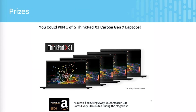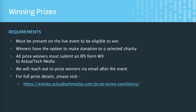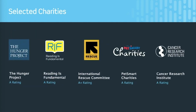For prizes today, we're giving out five ThinkPad X1 Carbon Gen 7 laptops and an Amazon $500 gift card after every presentation on the megacast — that's why we call it a megacast, because we have mega prizes. To be eligible, you must be present on the live event. You also have the option to make a donation to a selected charity. Through the megacast and ecocast event series, we have given out thousands of dollars to charity thanks to generous attendees who opt to donate their prize value.